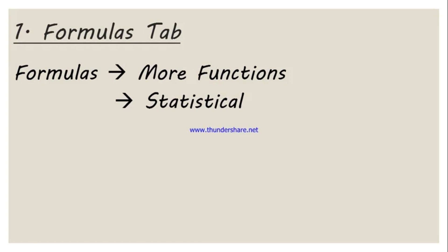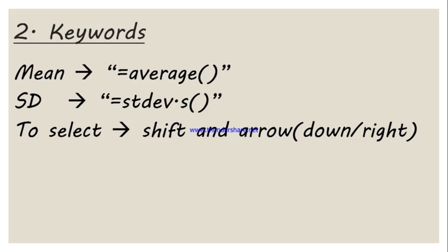I'm going to show you how to get to that. For the second method, we use keywords. For the mean, we use equal sign, then type AVERAGE, then parenthesis — inside the parenthesis is where we put the desired data for the mean. For the standard deviation, we type equal sign STDEV.S, then parenthesis, and inside the parenthesis we put the desired data.